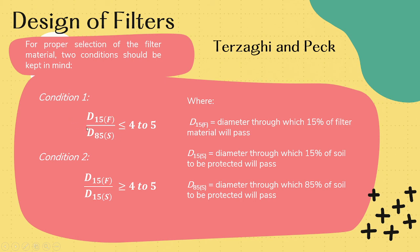You can get these values in the particle size distribution curve which we have discussed earlier in the previous chapters. There is a separate particle size distribution curve for the filter and a separate one for the soil to be protected.